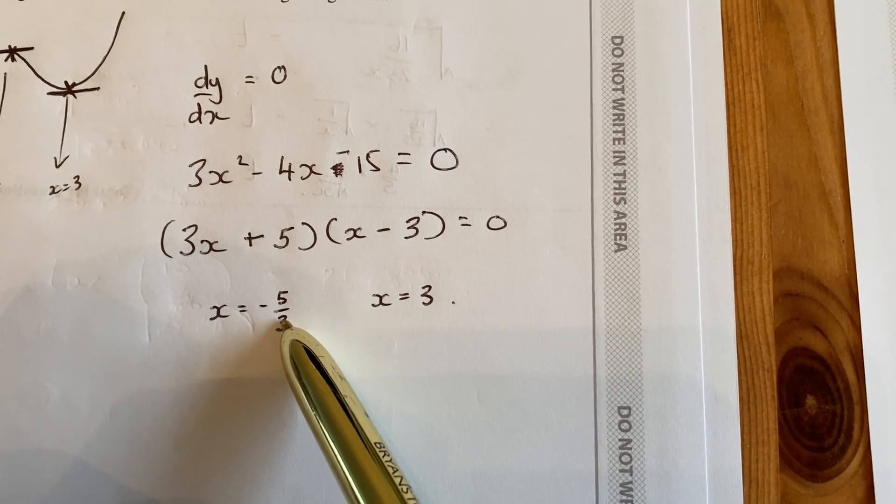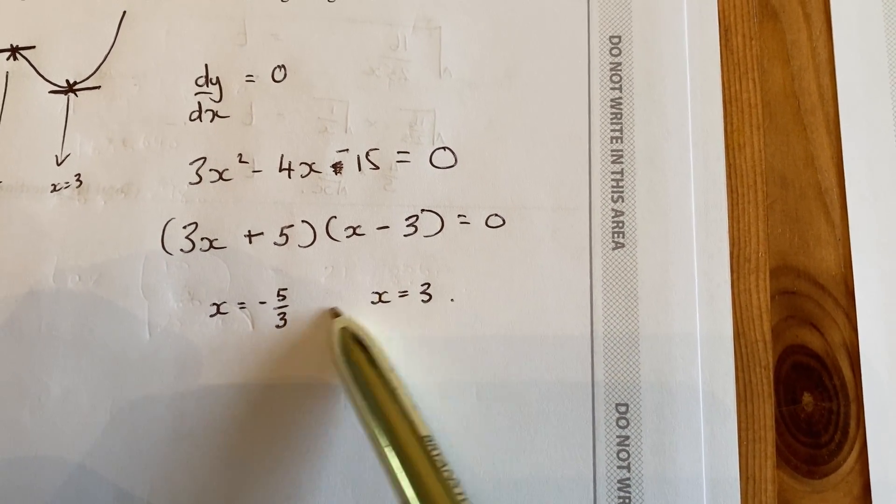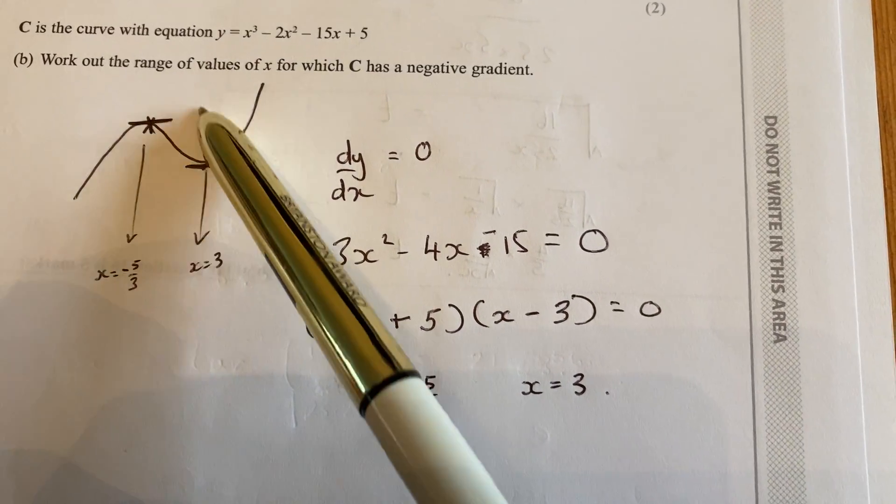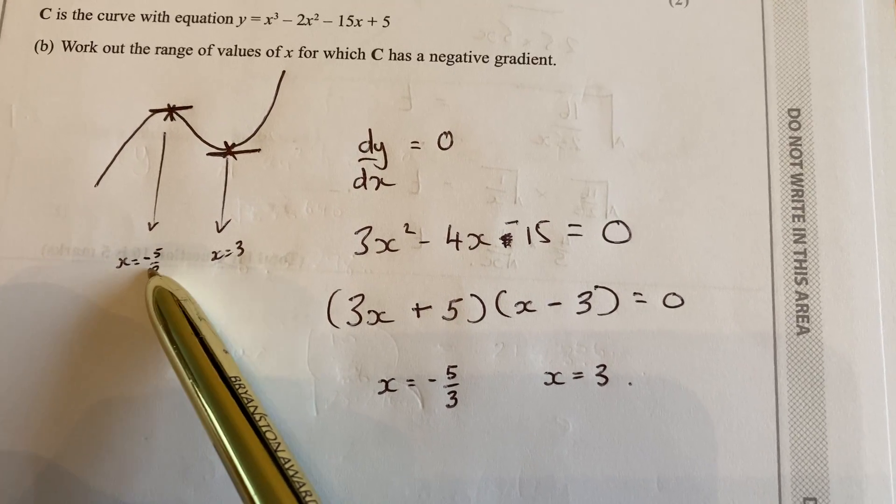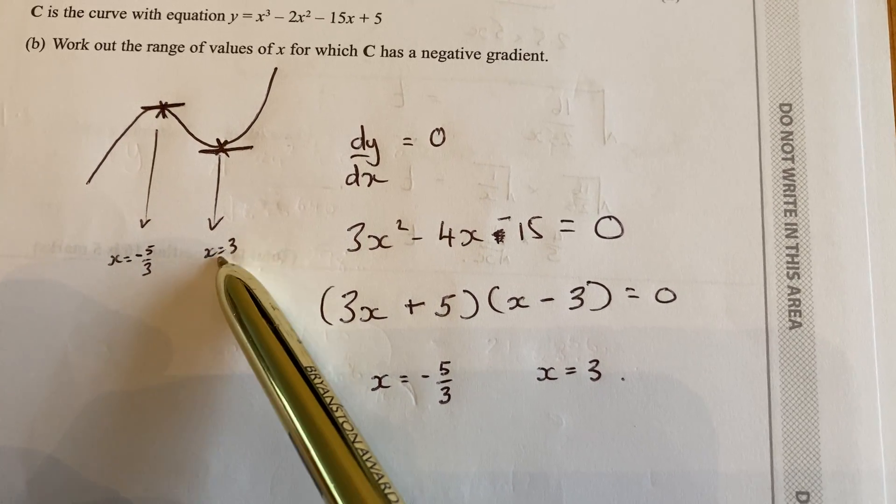OK, so these are the two values where you've got the peak and the trough. If we were to put this on a graph, obviously the x value at minus 5 over 3 would be to the left of where x equals 3.